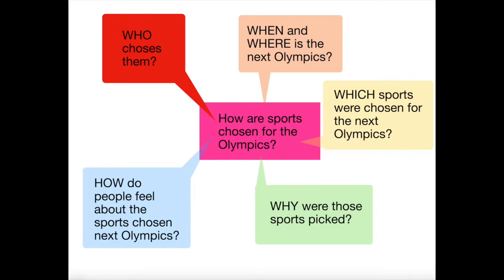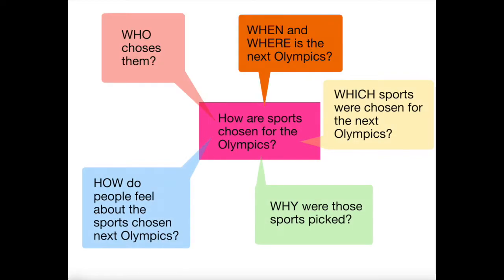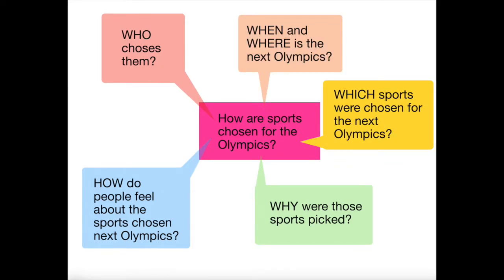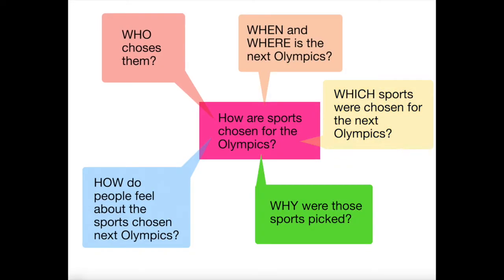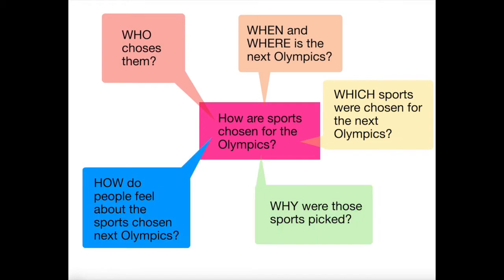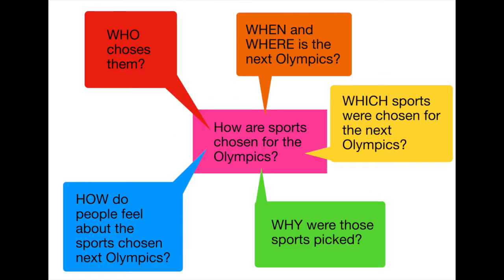In this example, the questions I came up with were: who chooses the sports, when and where is the next Olympics, which sports were chosen for the next Olympics, why were those sports picked over other sports, and lastly, how do people feel about the sports that are chosen for the next Olympics. By keeping these questions in mind as I search for sources, I think I'm going to be able to find a research question that's a little more interesting and perhaps more fun to form my own opinion on.